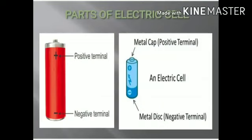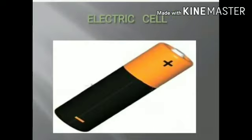You might have noticed that it has a small metal cap on one side and a metal disc on the other side. Did you notice the positive sign and negative sign marked on the electric cell? The metal cap is the positive terminal of the electric cell, and the metal disc is the negative terminal. All electric cells have two terminals: a positive terminal and a negative terminal.